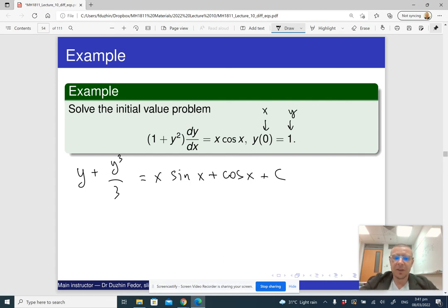So, it means that in order to find C, I'm going to substitute 1 for Y and 0 for X. So, doing that, I will get 1 plus 1 cube over 3 equals 0 times sine 0 plus cosine of 0 plus constant. So, this is essentially 0. Cosine 0 is 1. I guess 1 cancels out. So, my constant is 1 third. So, solving for C, I get 1 third.